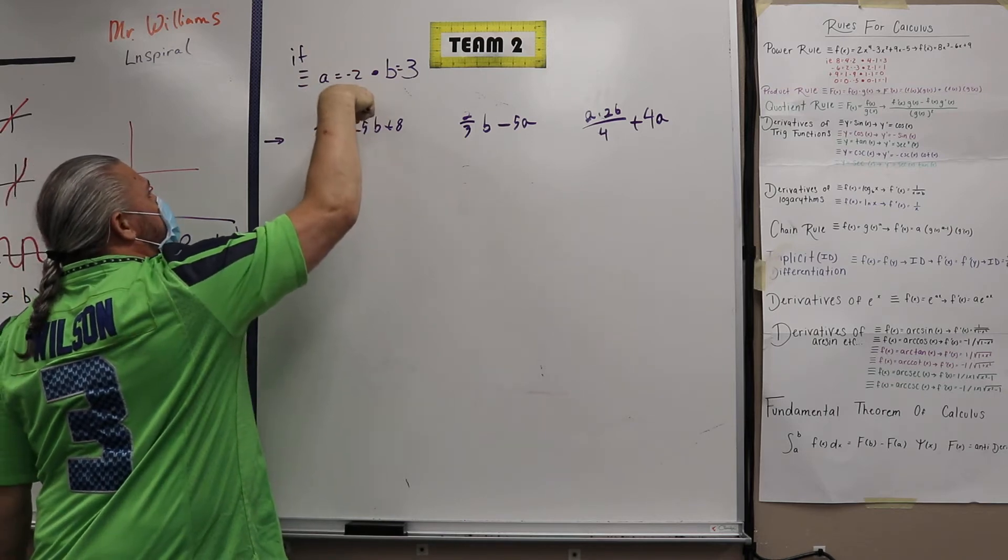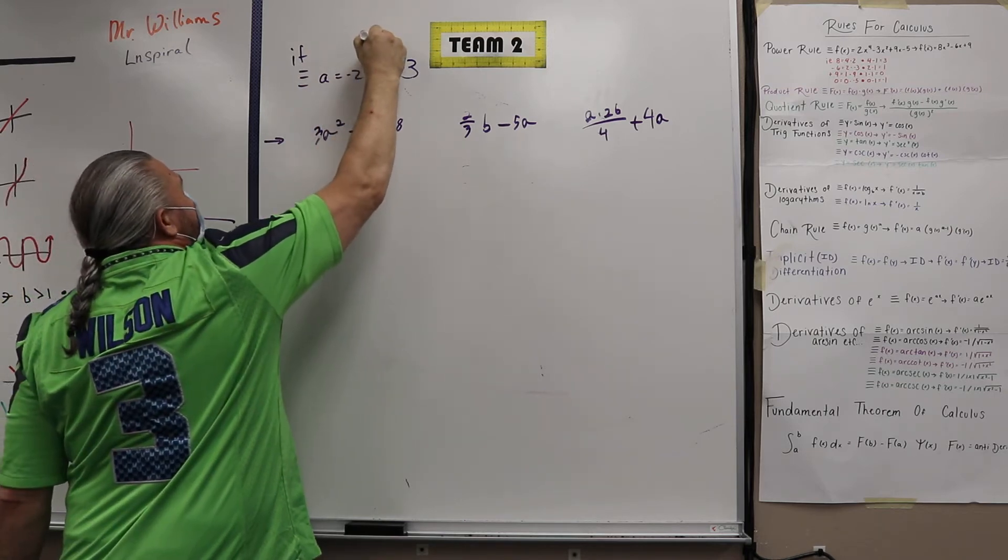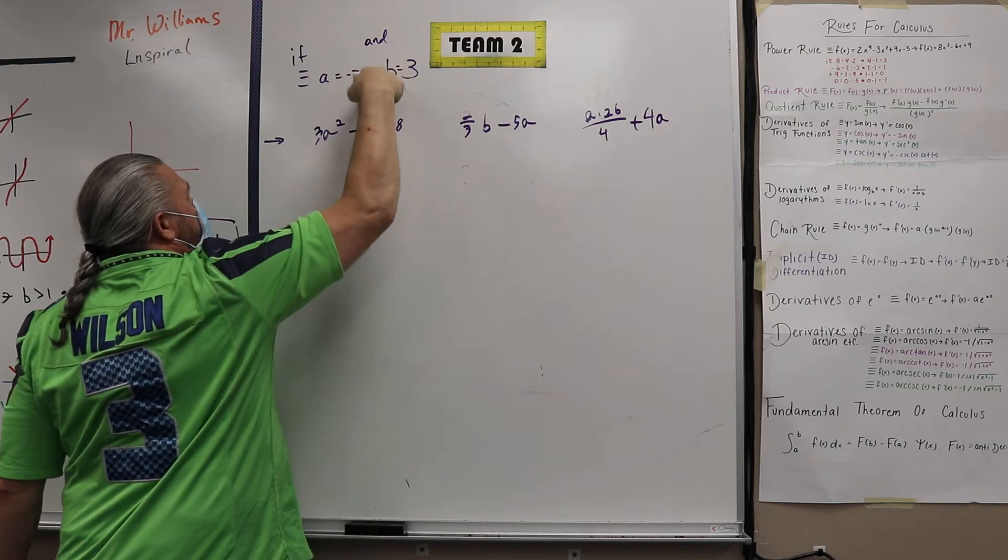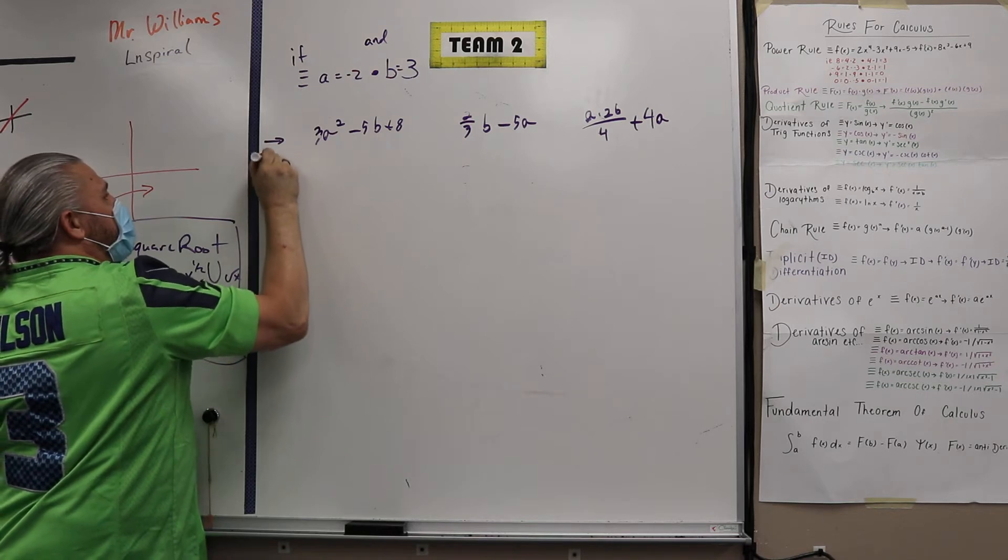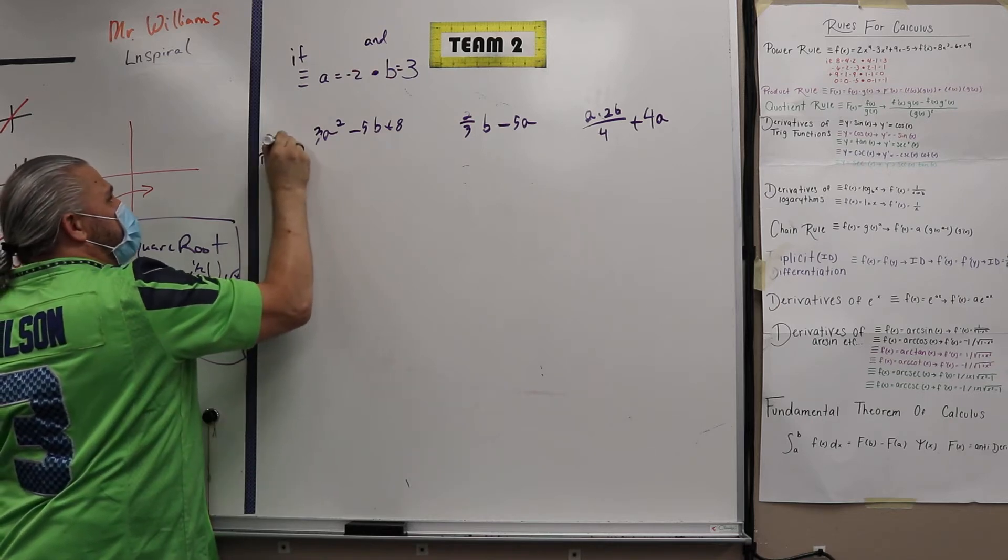A equals negative two, and that's the dot, b equals three. Then - that's this arrow, then...